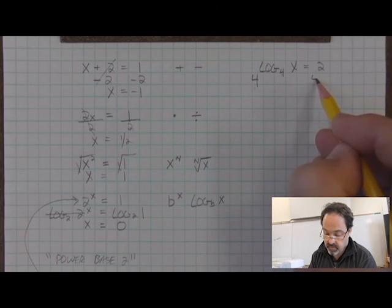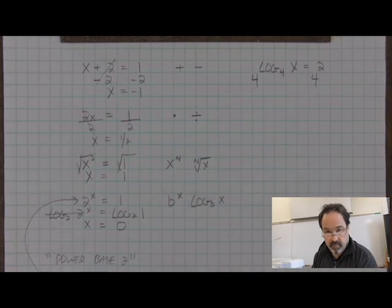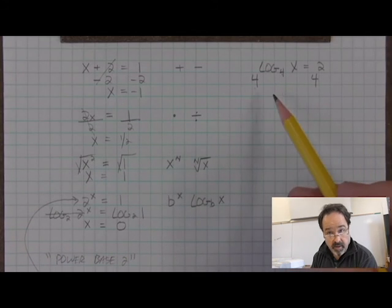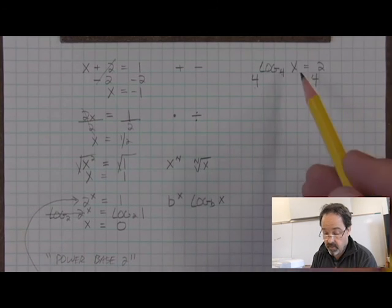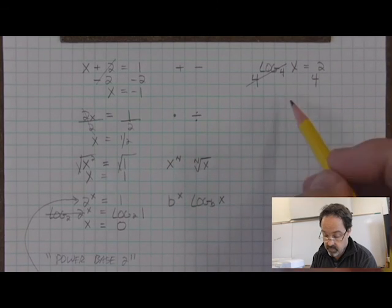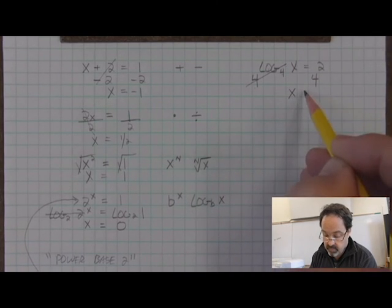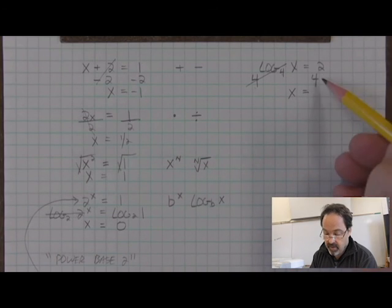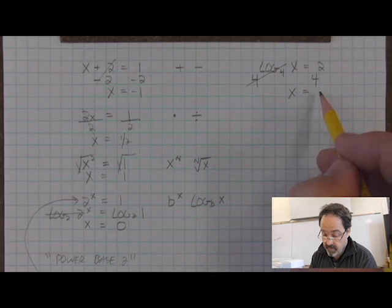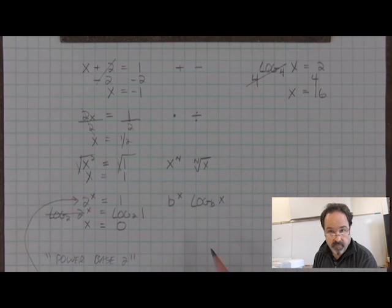And what I do to one side, I must do to the other. It's a little unusual, but we can do that. We can power base 4 both sides. And when we do, the log base 4 and the power base 4 cancel out, leaving x. And on the other side, I have to evaluate what 4 to the second power is. That's not too difficult. It's 16.